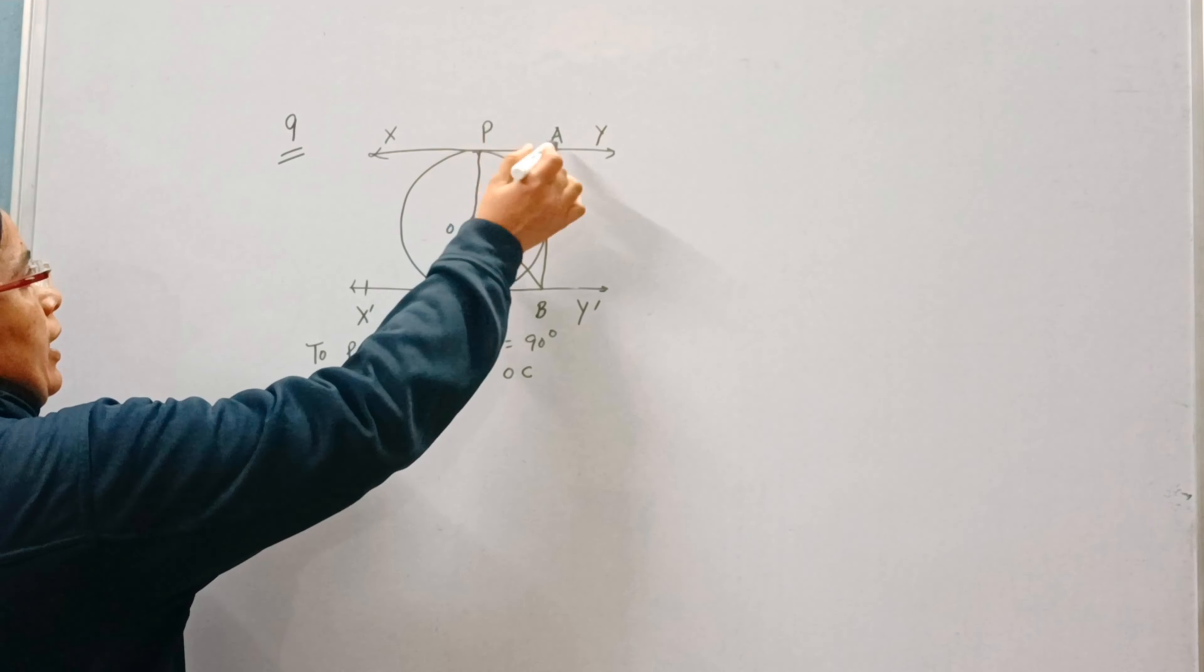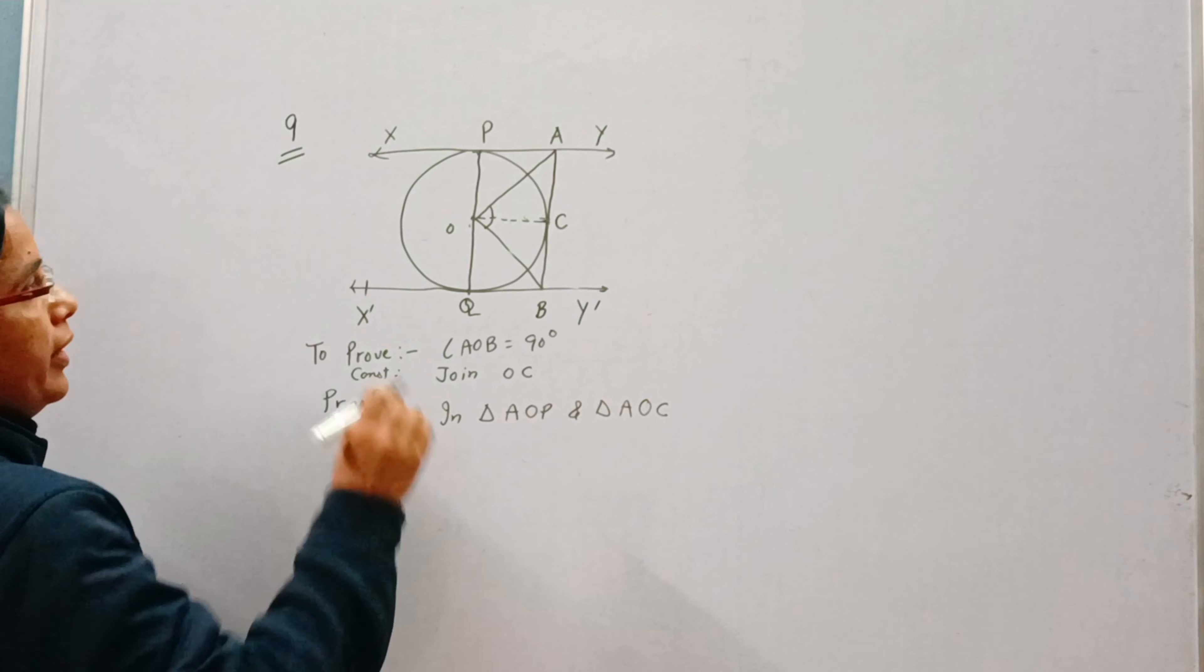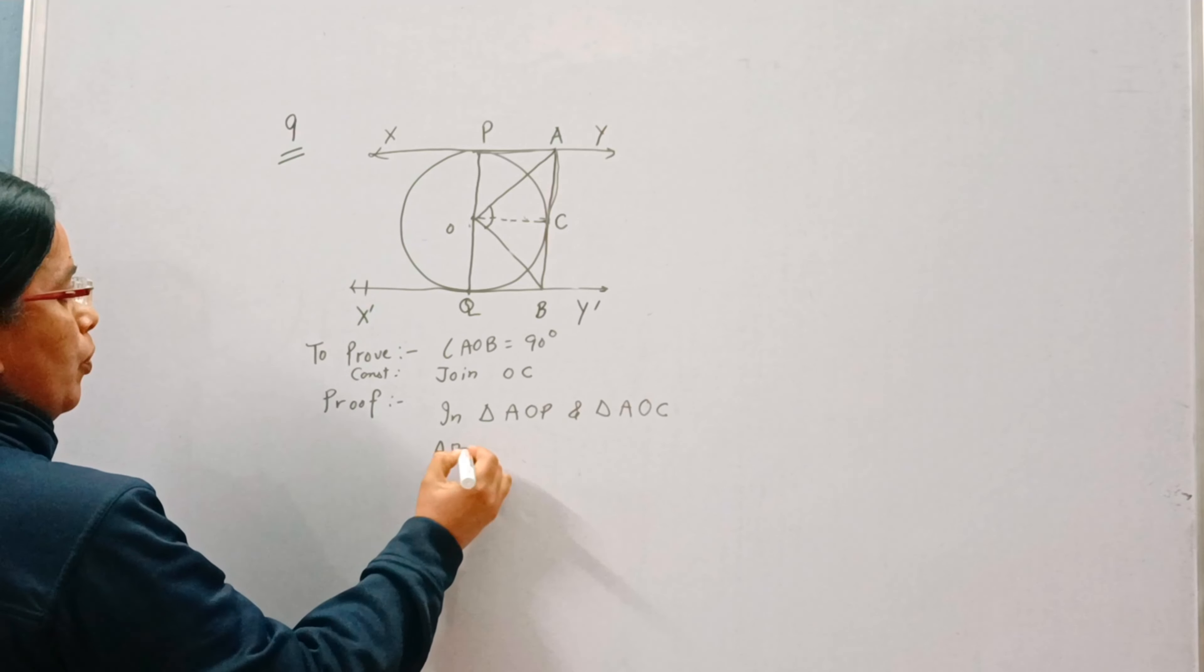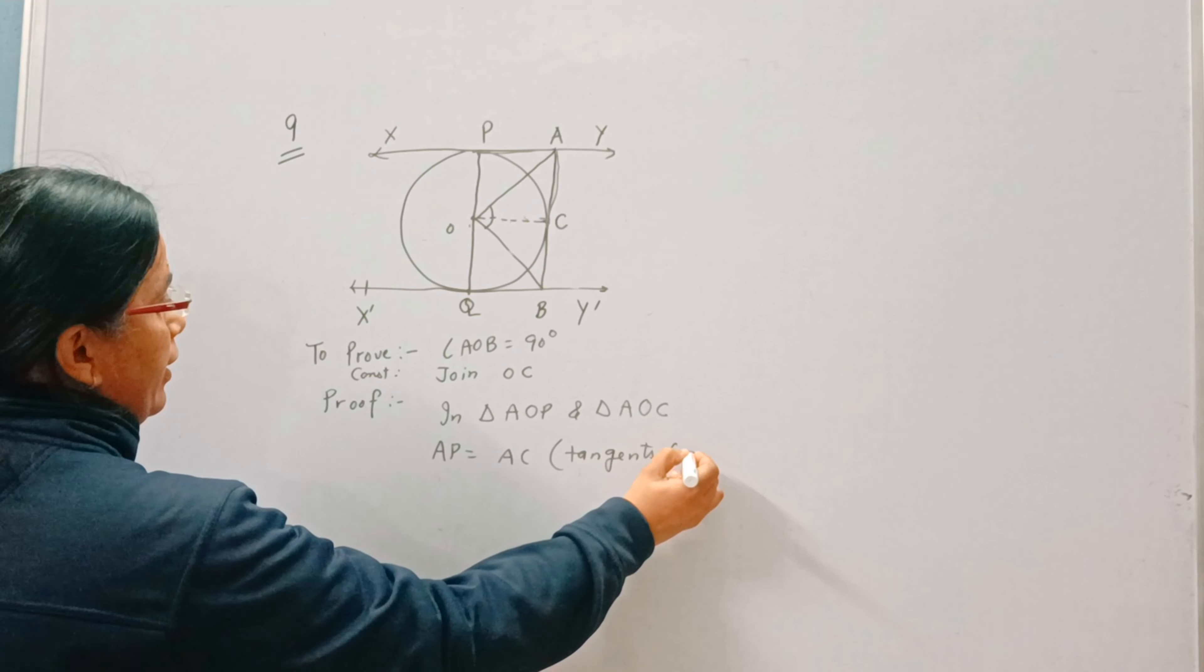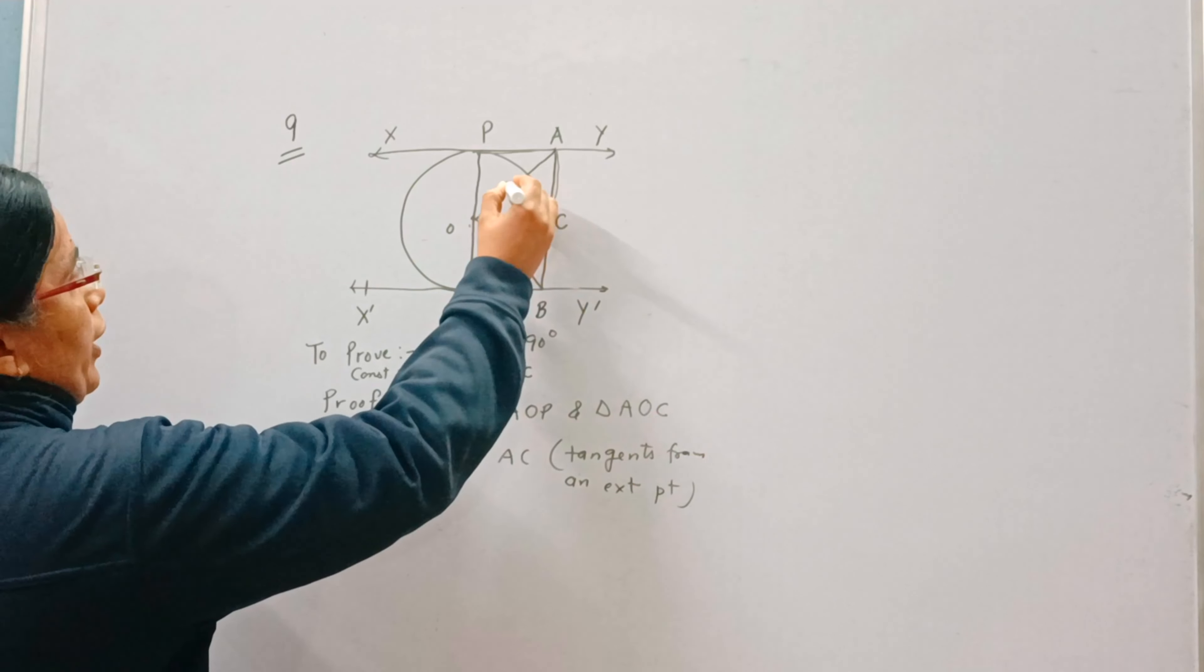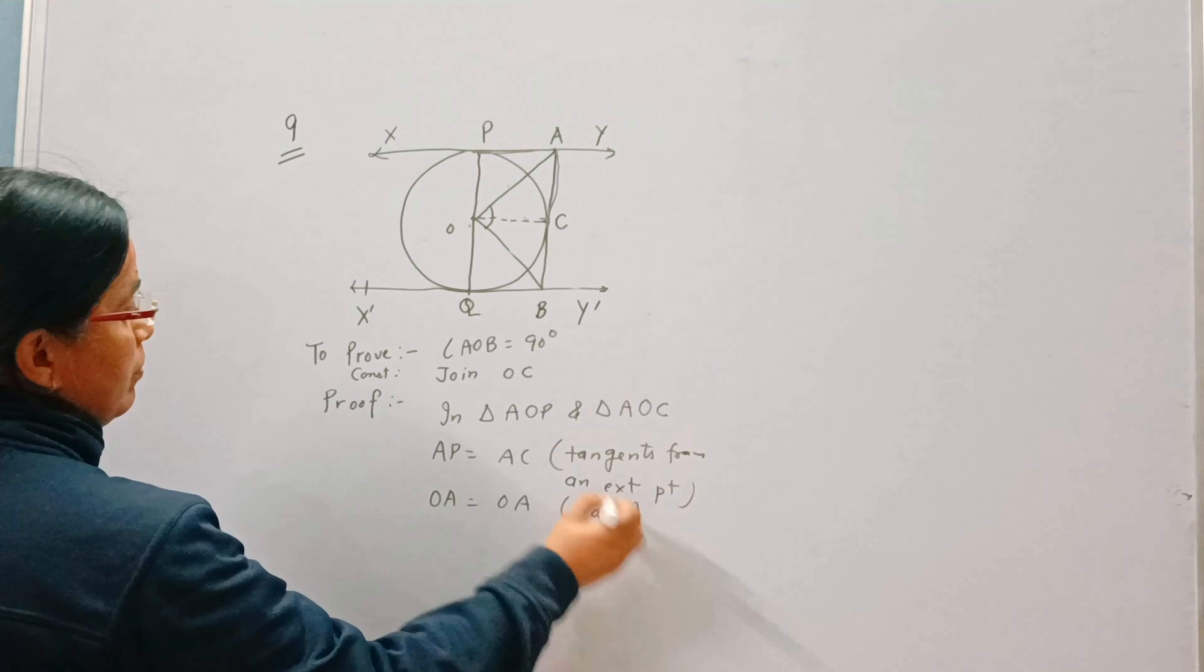Now take triangle aop and aoc. In triangle aop and triangle aoc, make them congruent. How? ap is equal to ac, tangents from an external point. oa is equal to oa, that is radii of the same circle.